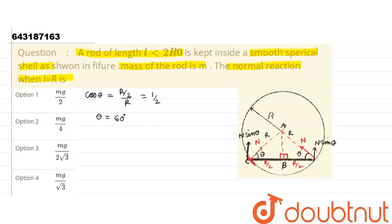The horizontal component of this N is N cos θ, and this N is N cos θ, and these both will get cancelled out. Also, the weight of this rod is acting at its midpoint and that equals mg.